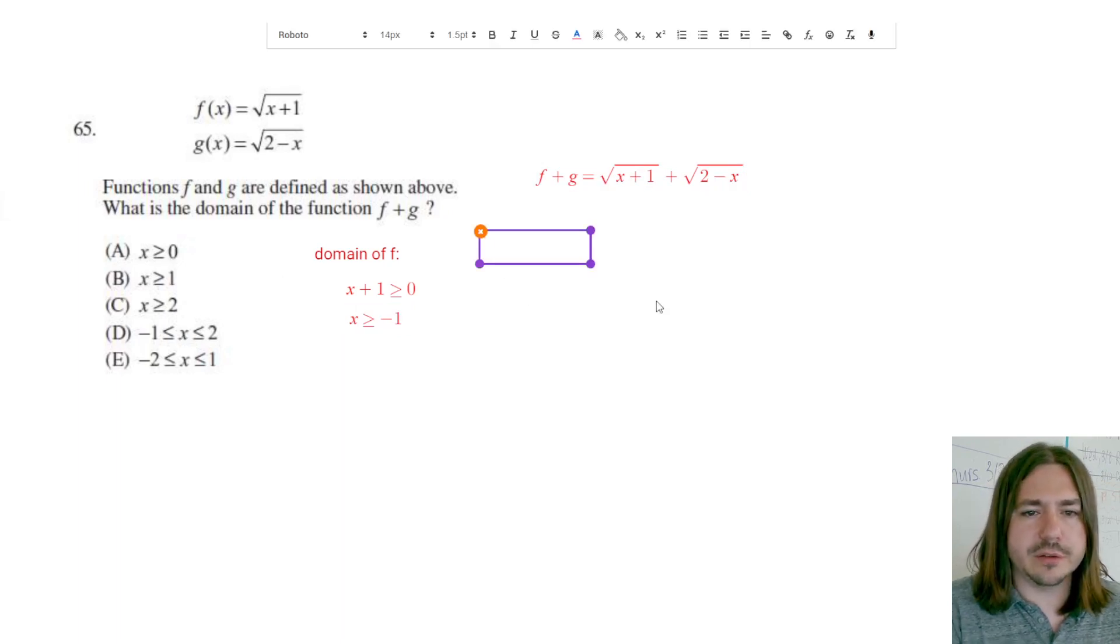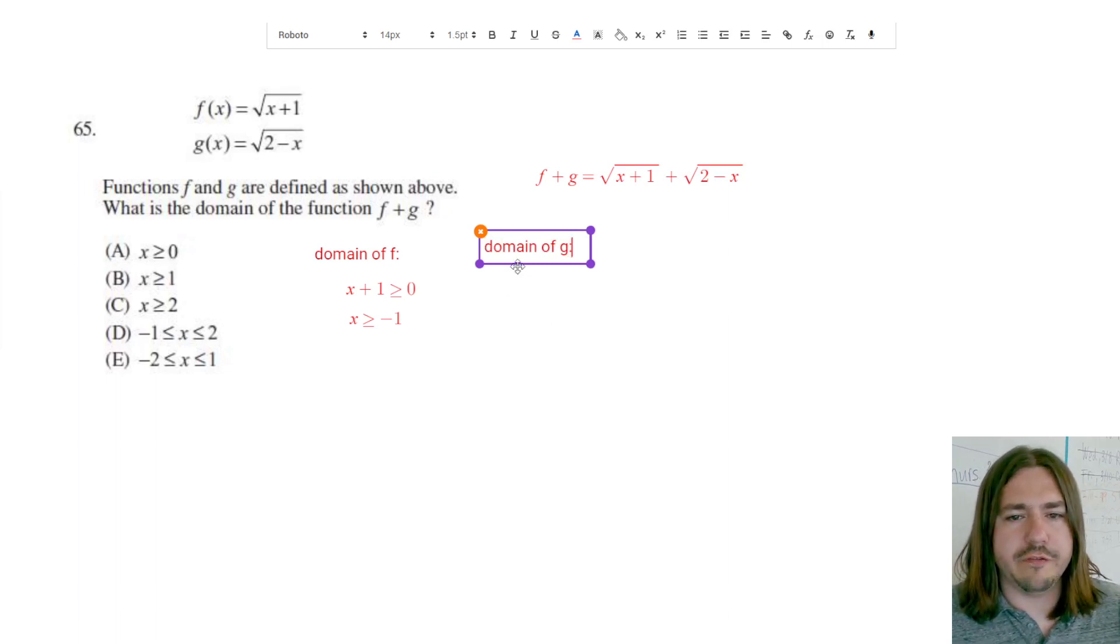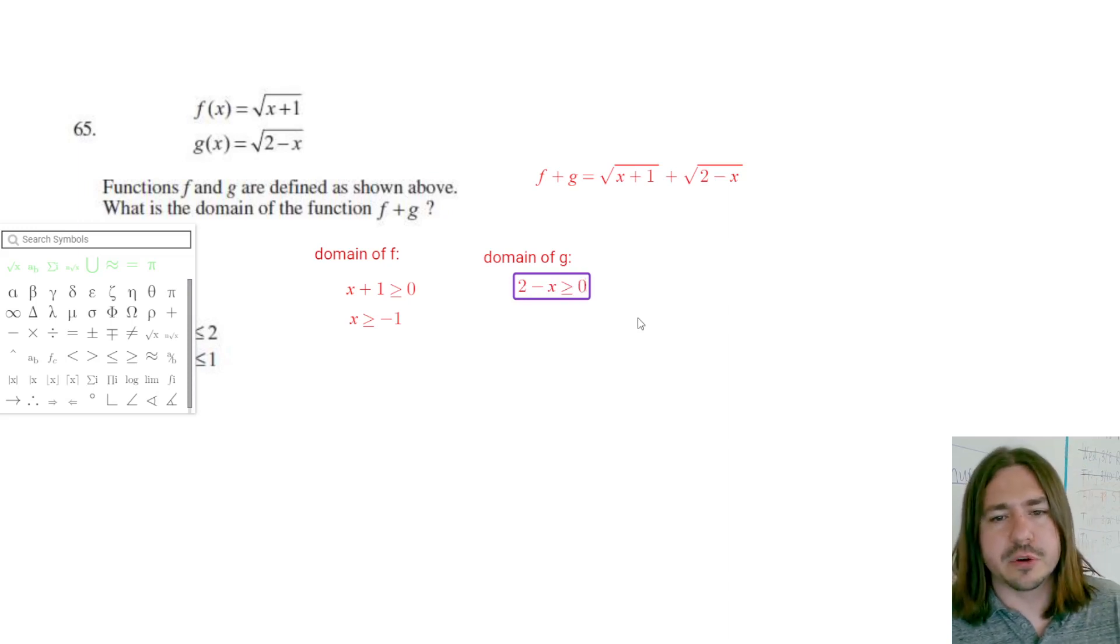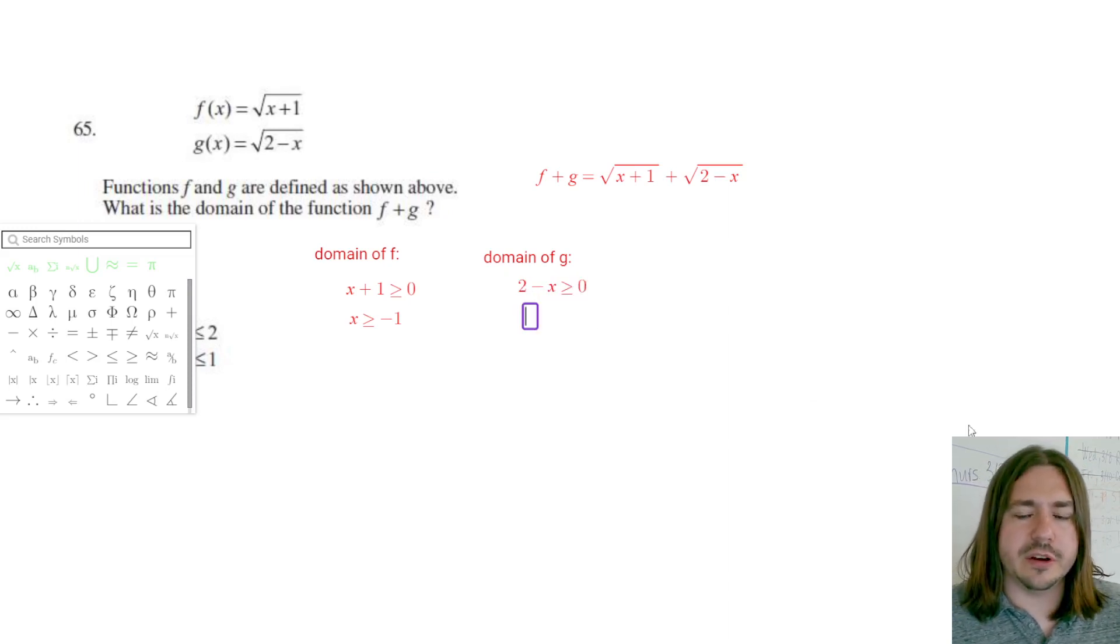Now the domain of g is going to be the values of x that make sure that the number underneath the radical is not negative. In other words, that needs to be greater than or equal to 0 as well. So here I can subtract 2 from both sides and I'll get negative x is greater than or equal to negative 2.